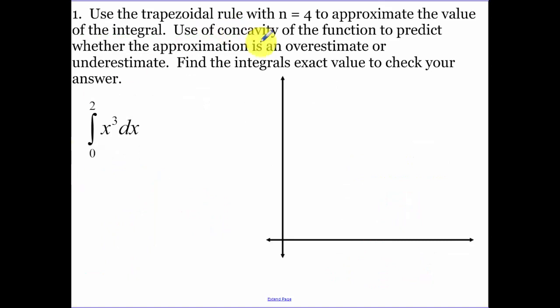Use the trapezoidal rule with n equals 4 to approximate the value of the integral. Use the concavity of the function to predict whether approximation overestimates or underestimates. So let's look at this. We have x cubed, so 0, 0, at 1 I'm going to be at 1, at 2 I'm going to be all the way up at 8. This is an idea of what our x cubed term looks like. Now I'm splitting this up into n equals 4. Our height is b minus a, 2 minus 0, over 4. So each one of them is worth a half. Our heights are each a half.